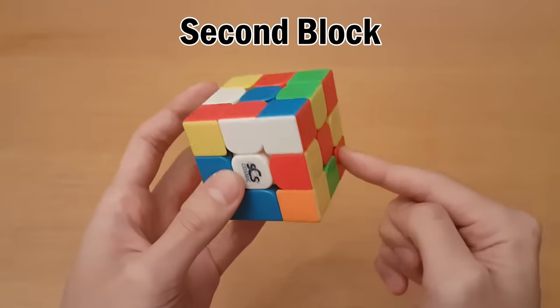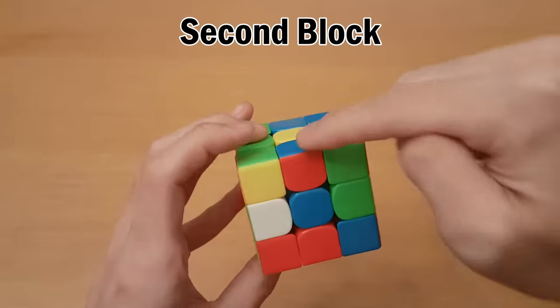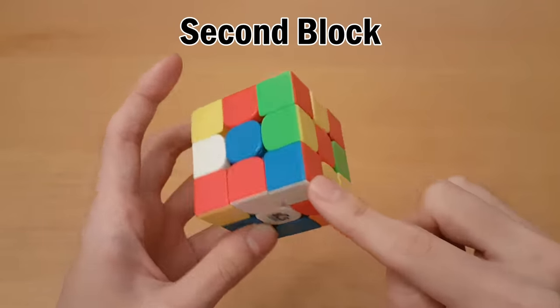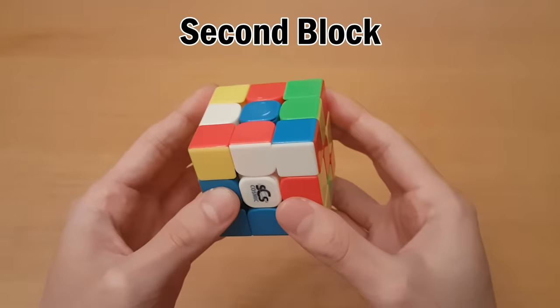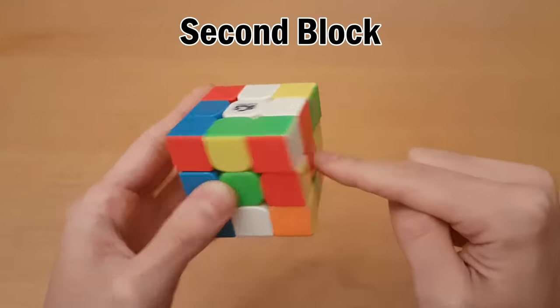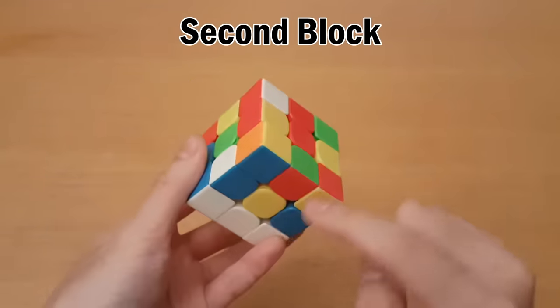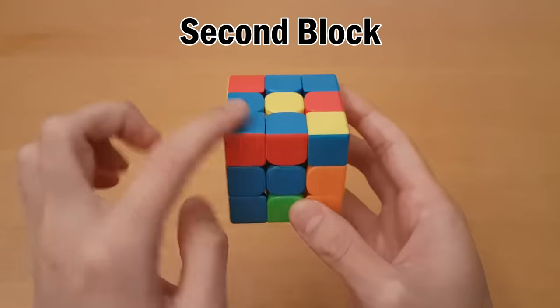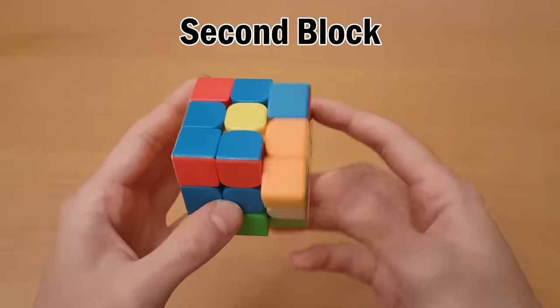Next we're doing the red block over here. So I see this corner, this edge, and this edge over here. So what I can do to join this edge to the center, and also join this corner with this edge, is do M' which puts this edge at the back, U which joins up this, and gets this one ready to pair up with this one, then R2. And then what that does is I have this pair now, and I have this down here, so just insert.